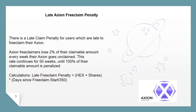There is a late claim penalty for users who are late to free claim their Axion. Free claimers lose 2% of their claimable amount every week their Axion goes unclaimed. This rate continues for 50 weeks, until 100% of their claimable amount is penalized. The formula is: late free claim penalty equals HEX shares × days since free claim start ÷ 350.